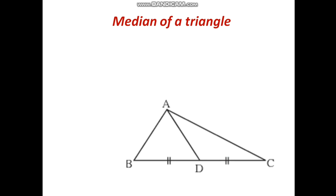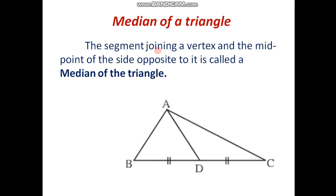Let us consider the diagram first. Here triangle ABC is given and there is a point D which is a midpoint of segment BC, which is the opposite side of vertex A. So, if we join point A and point D, it is one of the medians of triangle ABC. By this illustration we can define a median as: the segment joining a vertex and the midpoint of the side opposite to it is called the median of the triangle.